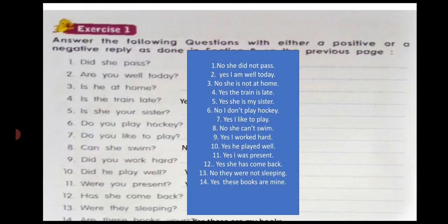There are two exercises. Exercise 2 is to be done by yourself. Exercise 1, I'll be doing with you. 'Did she pass?' — 'No, she did not pass.'